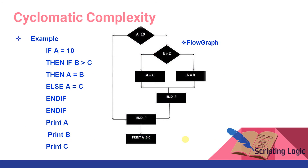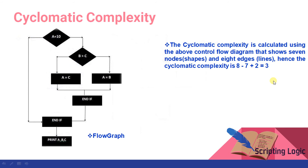Consider this example: there are 7 nodes and 8 edges, and there is 1 exit point. Accordingly, the cyclomatic complexity is calculated using the control flow diagram showing 7 nodes and 8 edges. Hence, the cyclomatic complexity is 8 minus 7 plus 2 times 1, which equals 3.